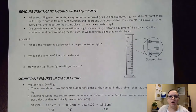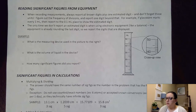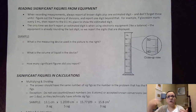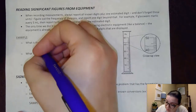When reading significant figures from equipment, I want to report all known digits plus one estimated digit. Anytime I'm given a piece of glassware, a ruler, a thermometer, or a barometer, what I want to do first before reading that piece of equipment is figure out how often are the little tick marks — how often are the divisions. Once I figure that out, I always report one digit beyond that. First, what is the measuring device used here in the picture? I would hope we recognize that as being a graduated cylinder.